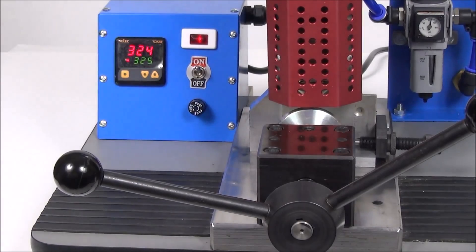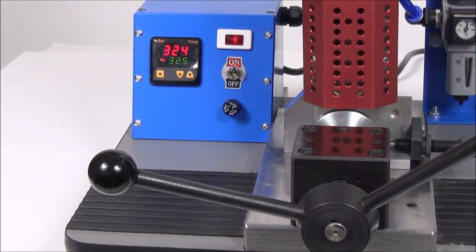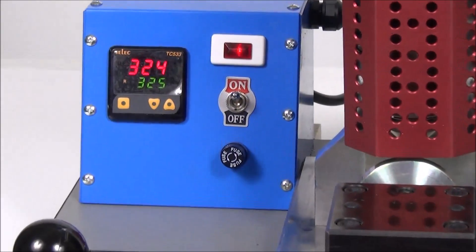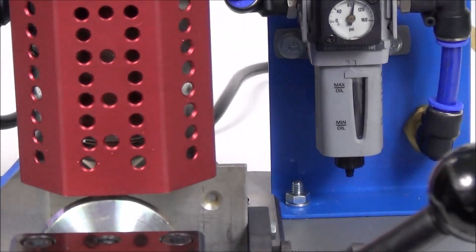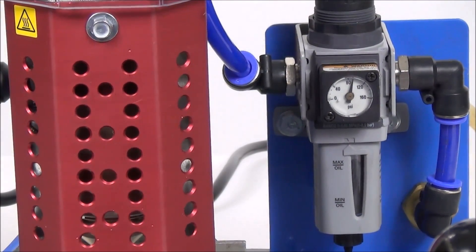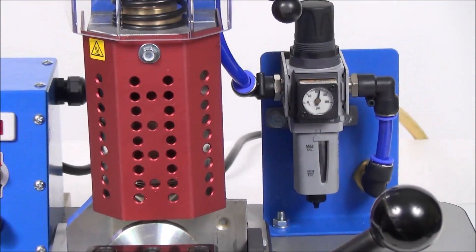The on off switch and temperature controller are located on the control box to the left of the unit. The air pressure gauge is located to the right. All pneumatic devices are of the no lube design making the machine ideal for medical and other clean room applications.